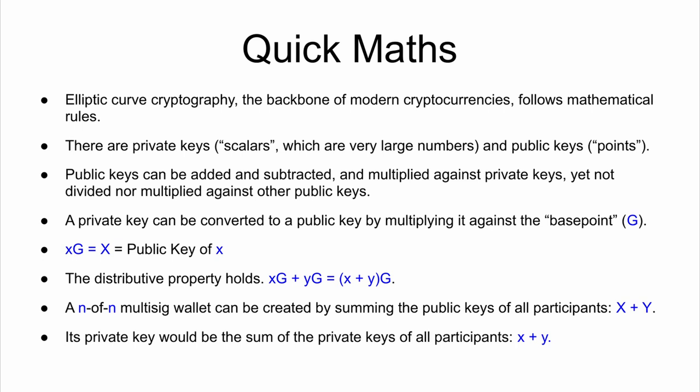Elliptic curve cryptography is the backbone of modern cryptocurrencies. Monero specifically uses a curve known as ED25519. There are private keys — technically called scalars — which are just very large numbers. There are also public keys, technically known as points. Public keys can be added and subtracted, and multiplied against private keys, but they can't be divided, which is why you can't get a private key from a public key, and they can't be multiplied by other public keys.